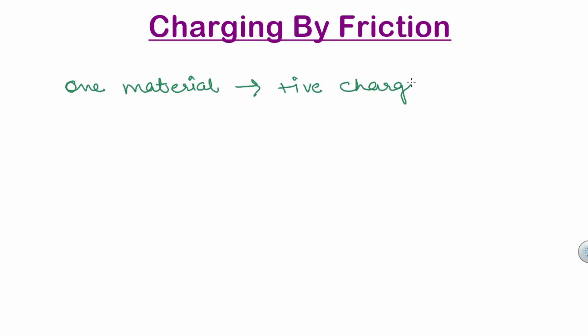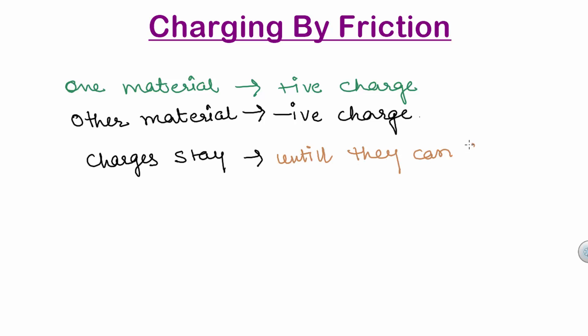This gives one material a positive charge and the other a negative charge. The charges stay on the surface of the material until they can flow or they get discharged.